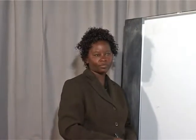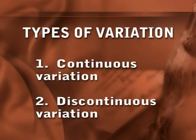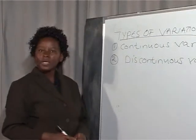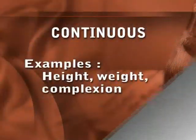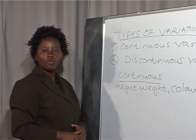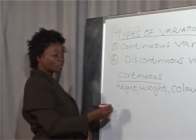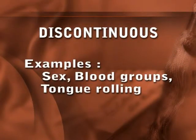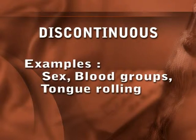There are two types of variation. The first one is called continuous variation. The second one is discontinuous variation. Examples of discontinuous variation include sex and blood groups.